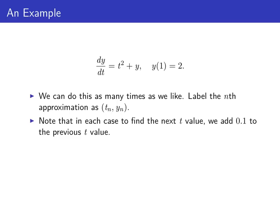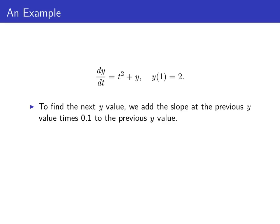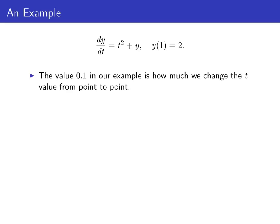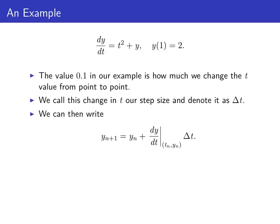To find the next y value from the previous y value, we added the slope of y at the previous point times the change in t (which was 0.1) to the previous y value. In notation: yₙ₊₁ = yₙ + slope × 0.1. That 0.1 is how much we changed the t value from point to point. We can call this change in t our step size, denoted delta t. So the formula becomes yₙ₊₁ = yₙ + (dy/dt at tₙ, yₙ) × Δt.